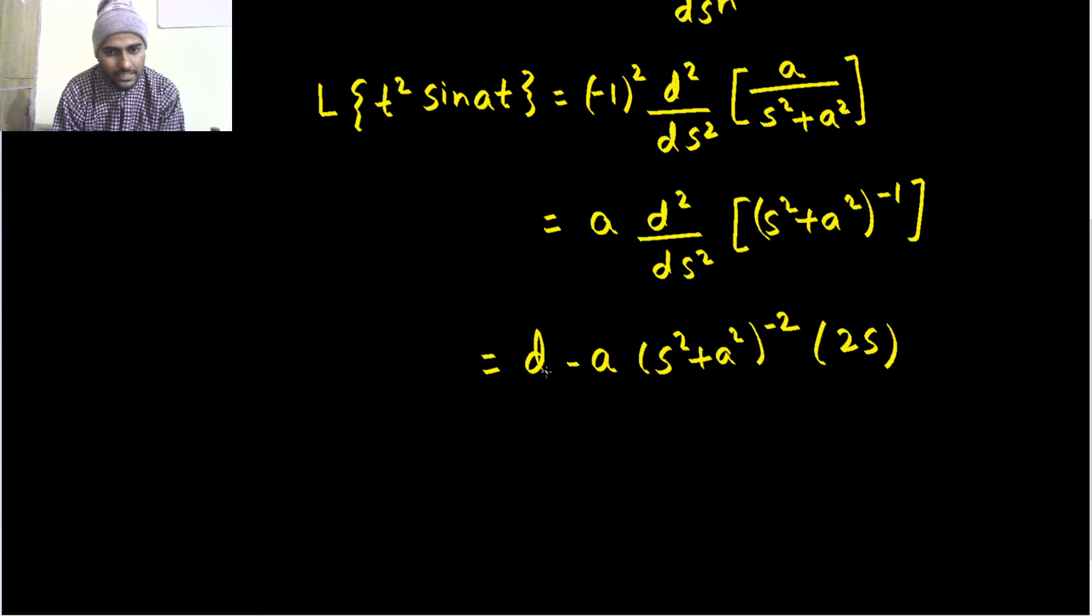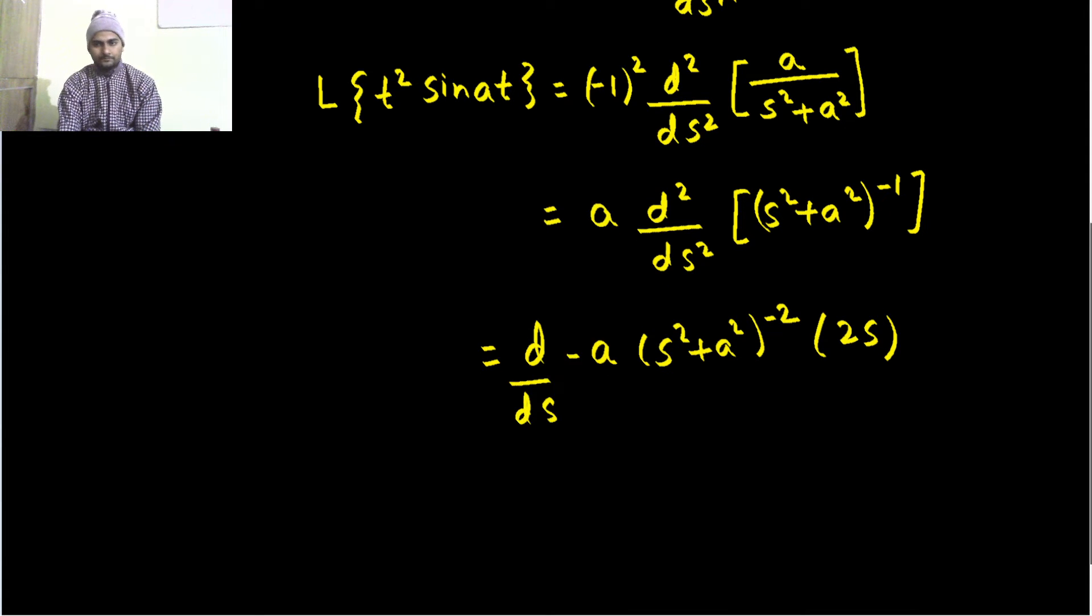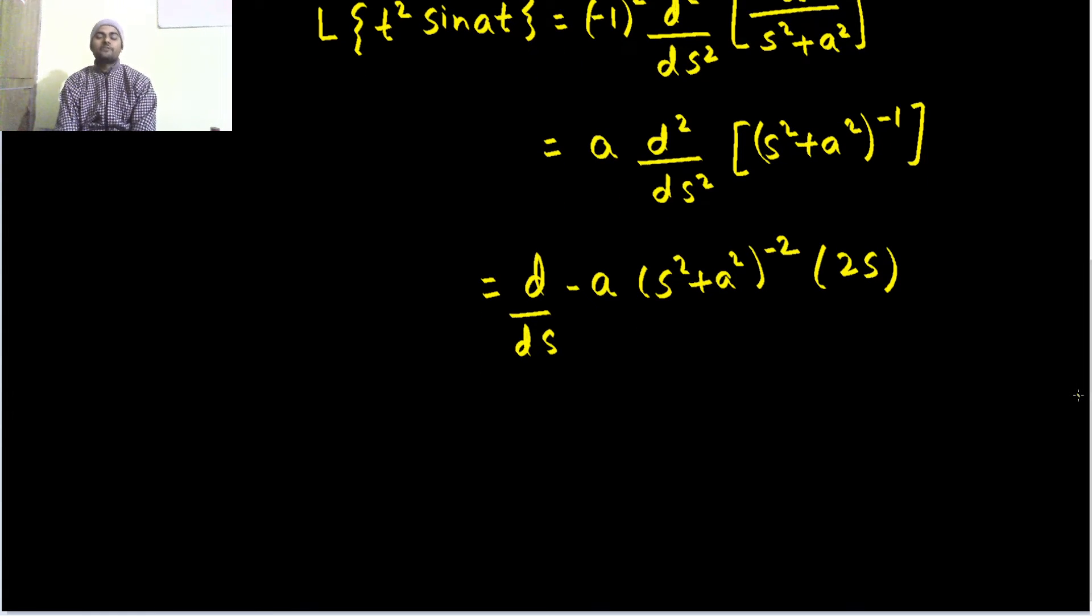So, d by ds, this is just the one-time differentiation which gave us this thing. Now, we will have to differentiate it once more.